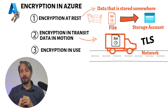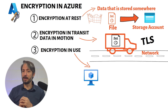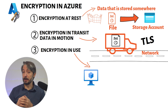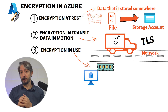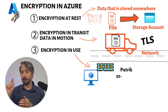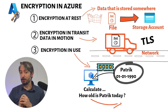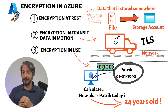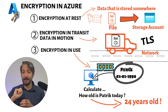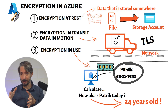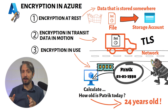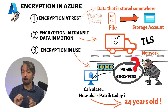Now the third one, encryption in use — this is an interesting one. In order for a computer to perform calculations, for example process data, it first needs to store it somewhere, such as in memory. Imagine it stores your name and date of birth in memory in order to calculate your age. Encryption in use means that the data, so your date of birth for example, is encrypted in memory. So in case somebody takes a dump — they find the physical machine and dump the memory — they would just see the encrypted data.